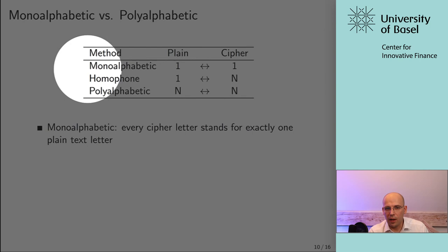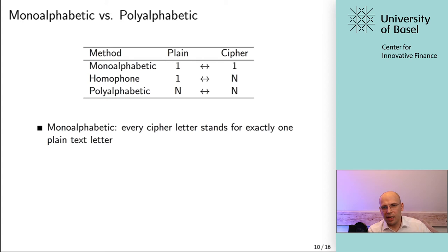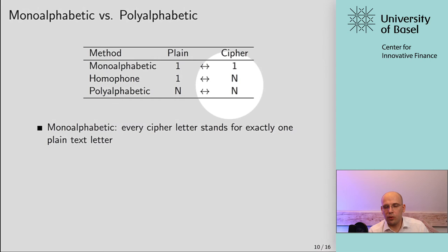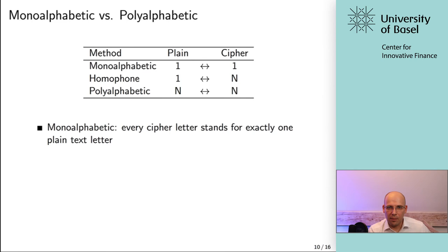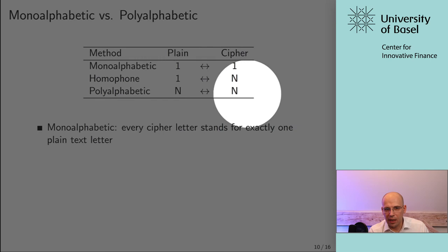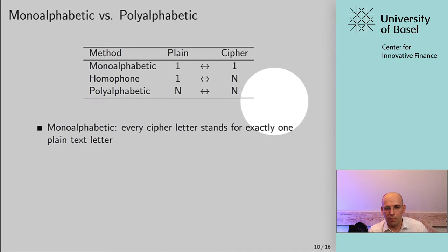With monoalphabetic substitution, you have a one-to-one mapping from plaintext to ciphertext — for each plaintext letter there is exactly one cipher letter. With homophone encryption, one plaintext letter gets mapped to potentially various cipher letters, so multiple symbols can represent the same plain letter. But with polyalphabetic substitution, you have an end-to-end mapping both ways — a ciphertext letter can be mapped to any plaintext letter, and a plaintext letter can be mapped to any ciphertext letter. This makes it really, really complicated to decrypt.